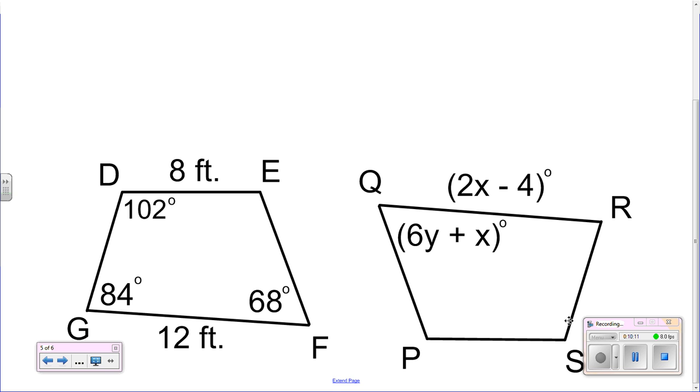So DEFG is congruent to SPQR. That means that S is the same as D, P is the same as E, Q is the same as F, and lastly G is the same as R.